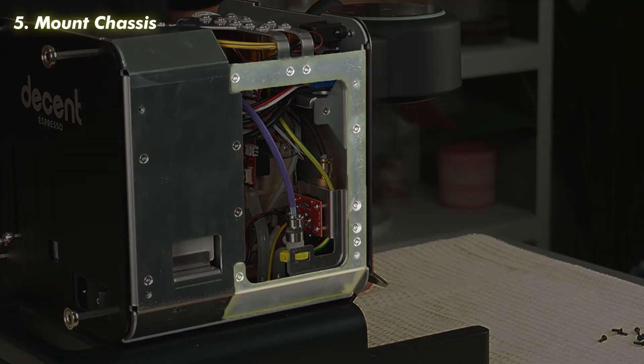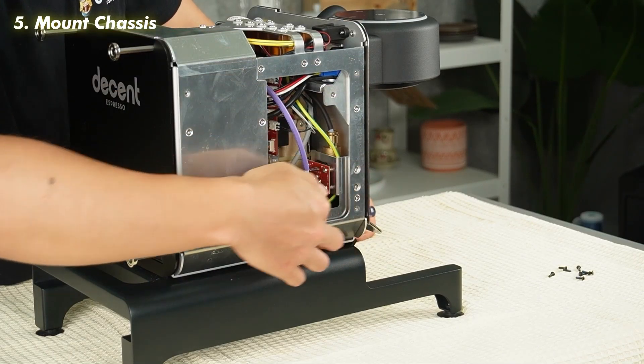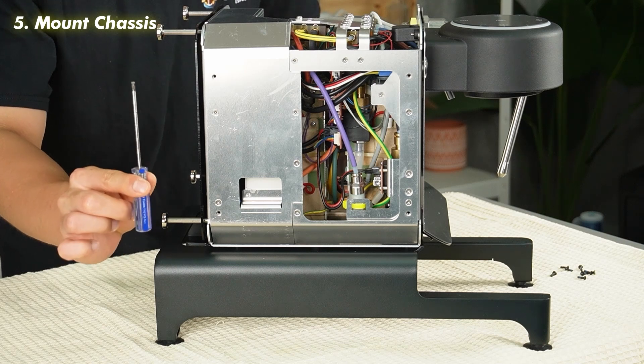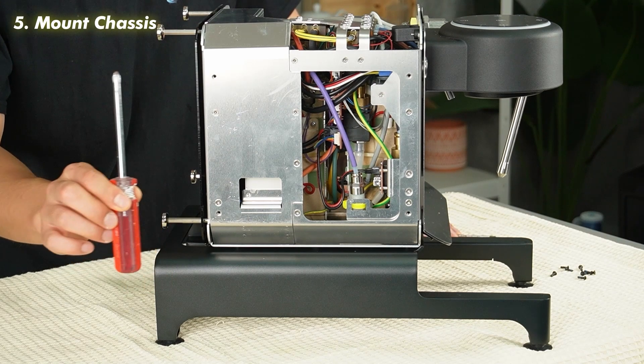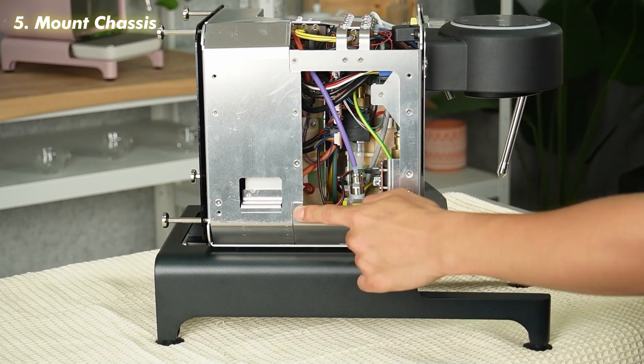We need to remove the chassis that the manifold is mounted on. If there are Torx T10 size screws, use a Torx T10 screwdriver, or if you have Phillips head screws, use a PH2 size Phillips head screwdriver. Remove the six screws securing the chassis.